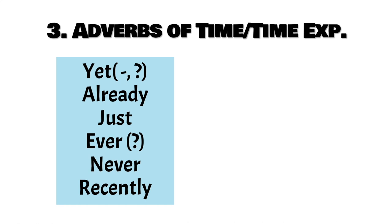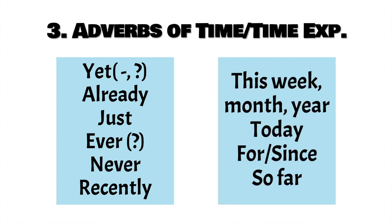So, we have YET, and we use YET for negative sentences and questions. Already. Just. Ever — for questions. Never. And recently. These are the most common adverbs of time; there are others. For time expressions, we have: this week, this month, this year, today. For — for five years, for six years, for four months. Since — since 1984, since I was five years old. And so far. Again, there are many others, but these are the most common ones.